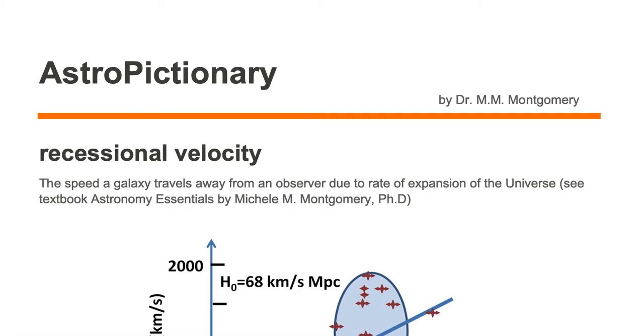Recessional velocity is the speed a galaxy travels away from an observer due to the rate of expansion of the universe.